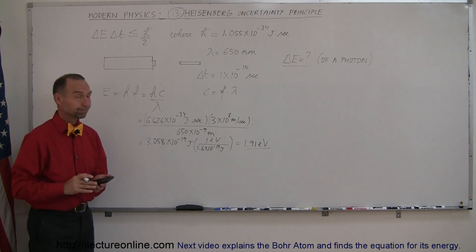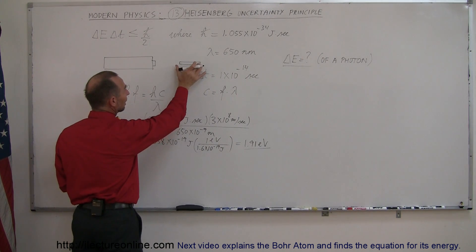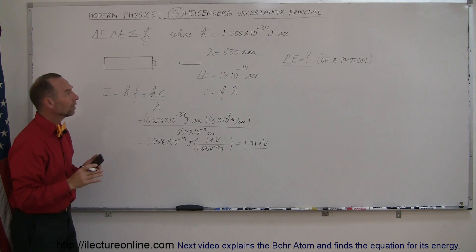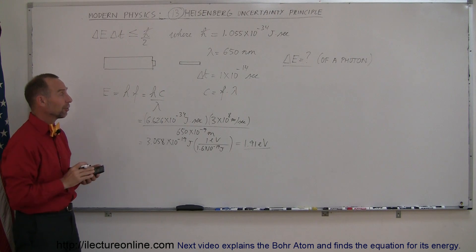However, since this is a photon and we're trying to find the energy of a photon within a small beam that has a duration of only 1×10⁻¹⁴ seconds, we're going to have some uncertainty about the energy of that photon.